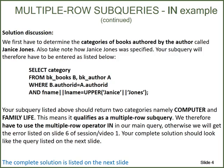However, in the database, last name and first name are stored in uppercase. Therefore, you must use UPPER('Janice Jones'), and to save time, you can concatenate FNAME and LNAME and then compare it to UPPER of 'Janice' concatenated with 'Jones'. Your subquery should return two categories, namely Computer and Family Life. This means it qualifies as a multiple row subquery because it returned more than one row. We therefore have to use the multiple row operator IN in our main query, otherwise we will get an error as listed in session one.